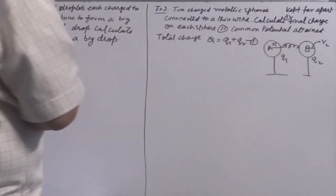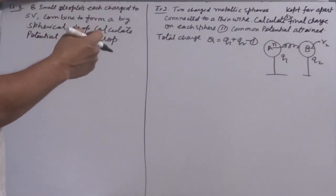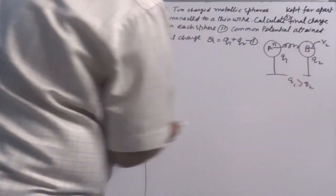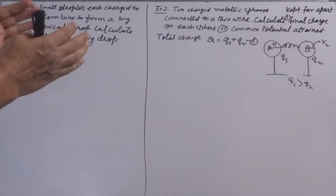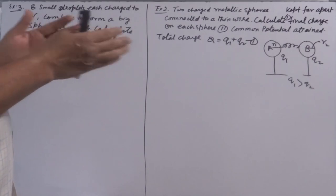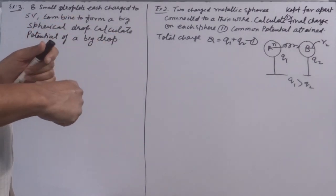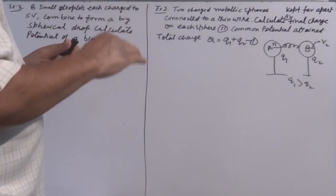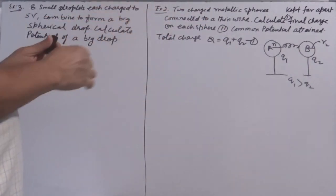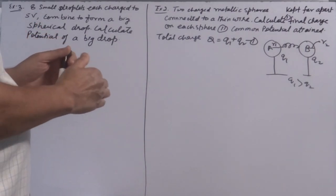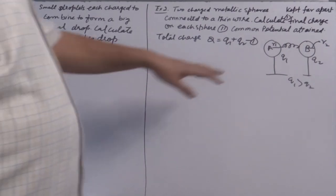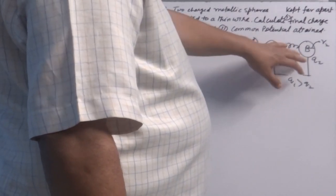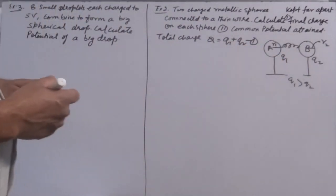When these two metallic spheres are connected, charge begins to move from one sphere to another, assuming Q1 is greater than Q2. This is analogous to two bodies at different temperatures brought into contact — heat flows from the hotter body to the cooler one, and eventually both reach a common temperature. Similarly, charge will flow until both spheres acquire the same potential.